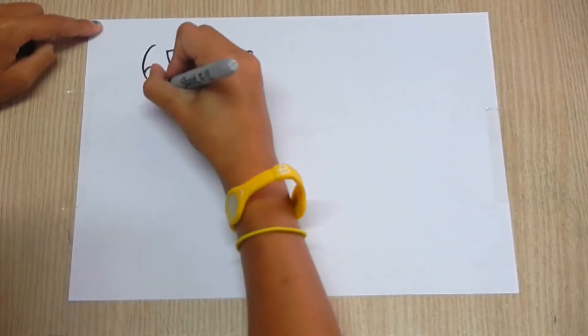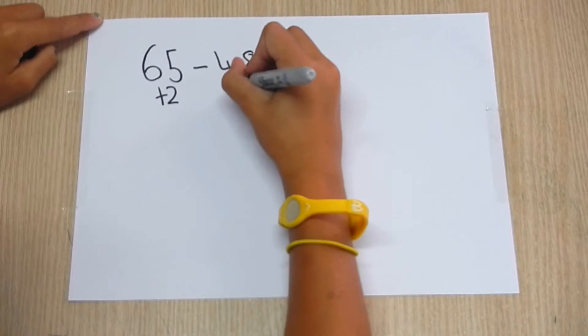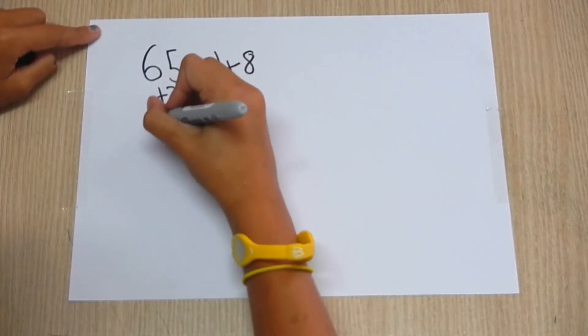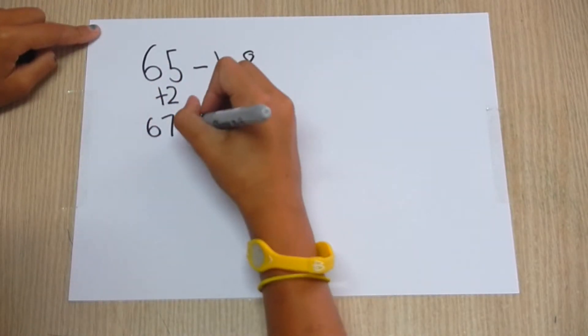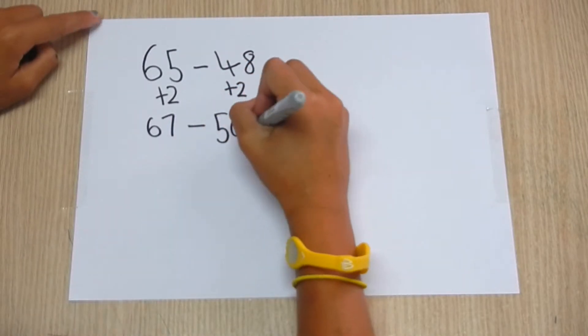You add 2 to both of them because that makes 48 a tidy number. Then you take away 67 and 50 and the answer is 17.